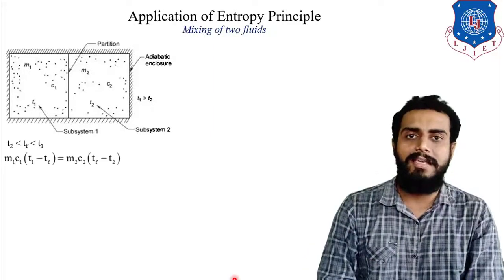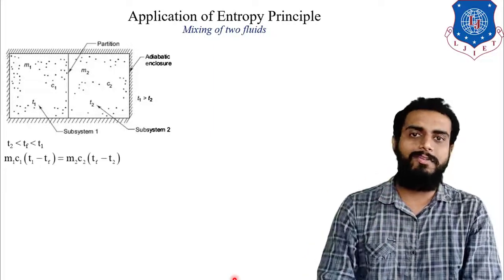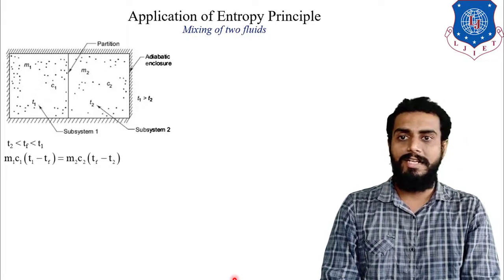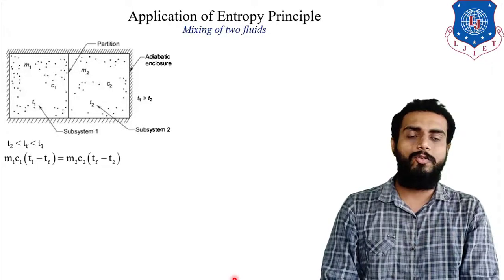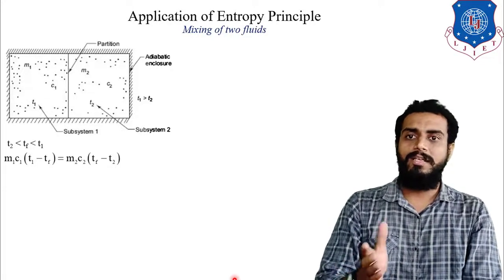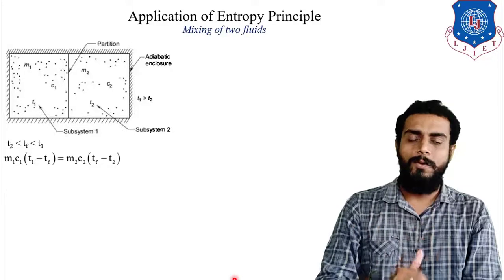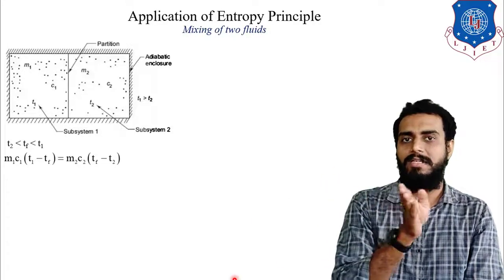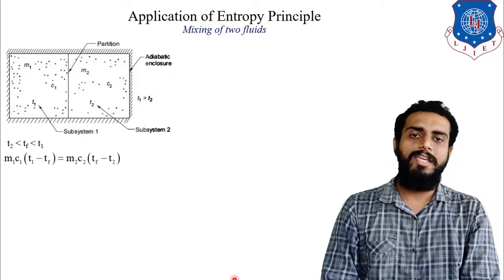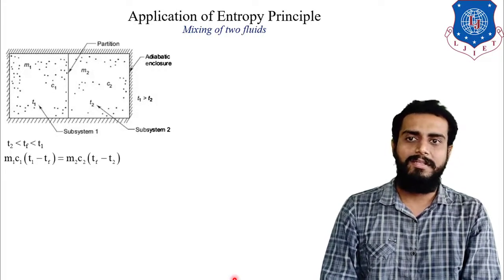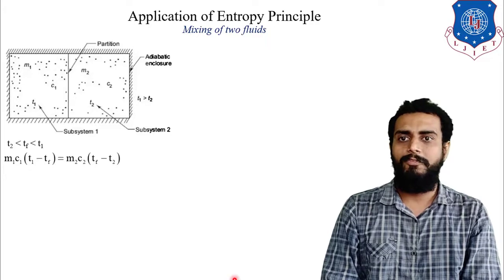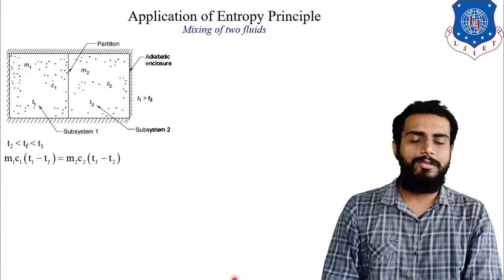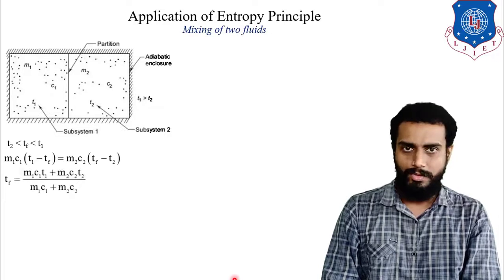Using heat transfer Q = MCΔt, we write M1·C1·(T1 − Tf) = M2·C2·(Tf − T2). Making Tf the subject: Tf = (M1·C1·T1 + M2·C2·T2) / (M1·C1 + M2·C2).